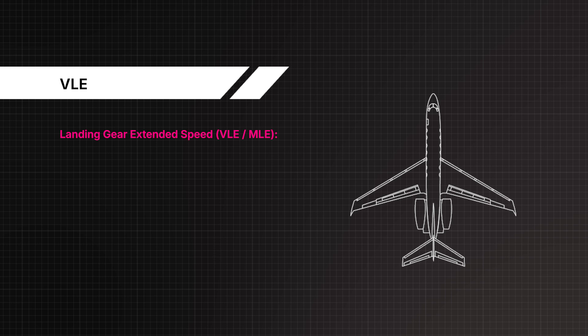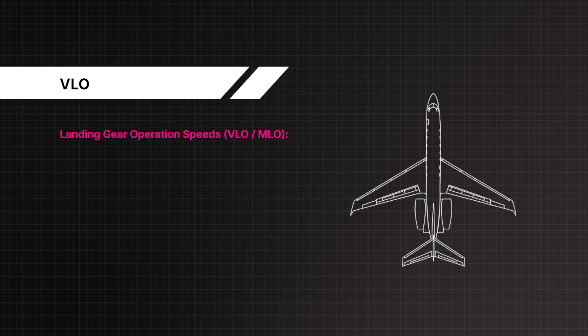Landing gear extended speed VLE/MLE: 250 knots or 0.70 MAC, gear doors open or closed. Landing gear operation speeds VLO/MLO: 225 knots or 0.70 MAC normal operation; 175 knots alternate operation.